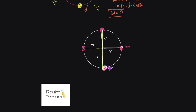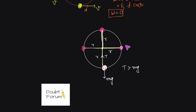Let's take the example of a specific point. When the object is at the bottom position, the forces acting on it are: weight Mg directed downwards, and tension T in the string directed towards the center. We need a centripetal force to make this object move in a circular path, so the direction of centripetal force is towards the center. Therefore T must be greater than Mg, and the net centripetal force FC equals T minus Mg.